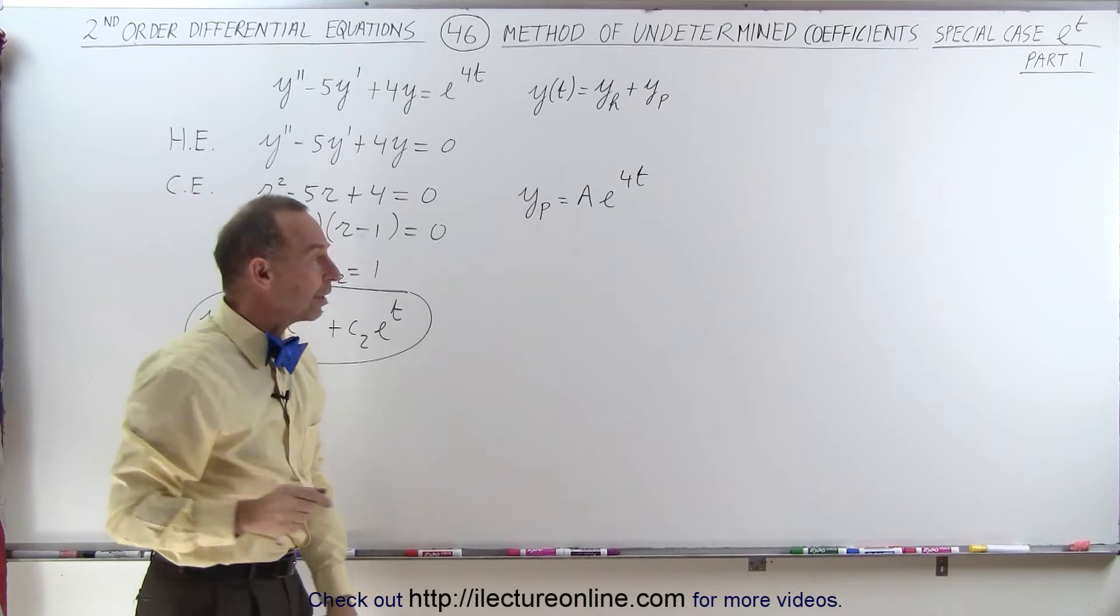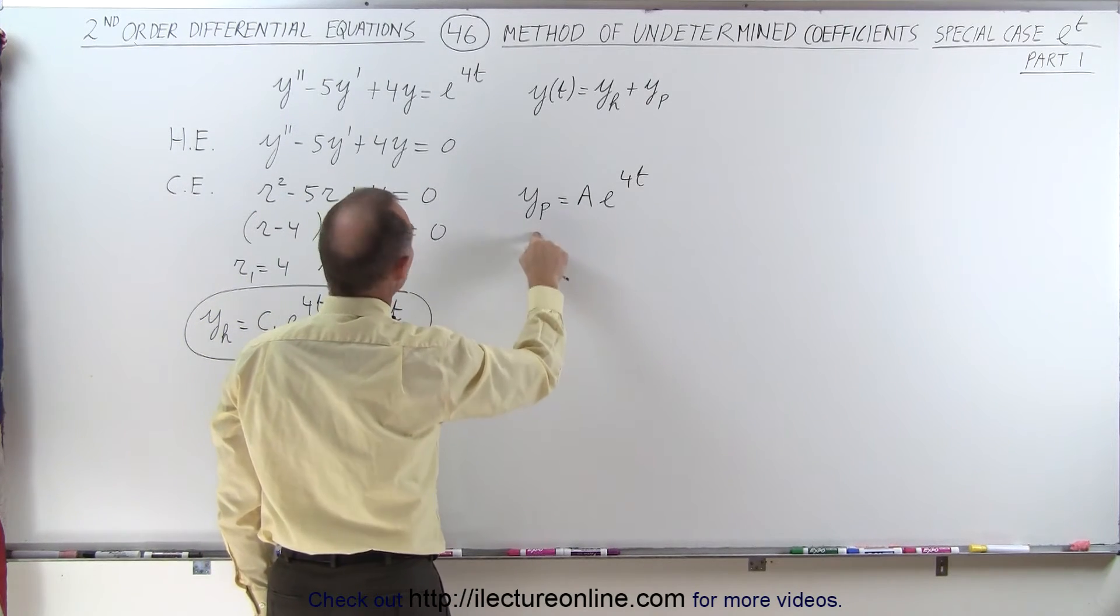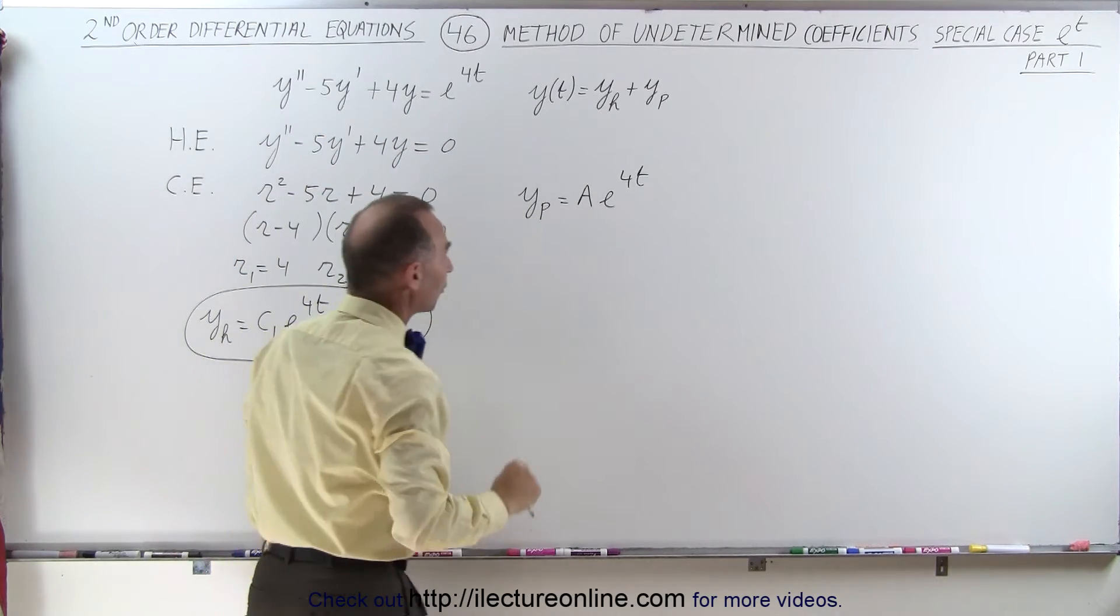So to solve for that undetermined coefficient, we'll use the same method as before. We take the first and second derivative of this, plug it back in the original function and solve for the undetermined coefficient.